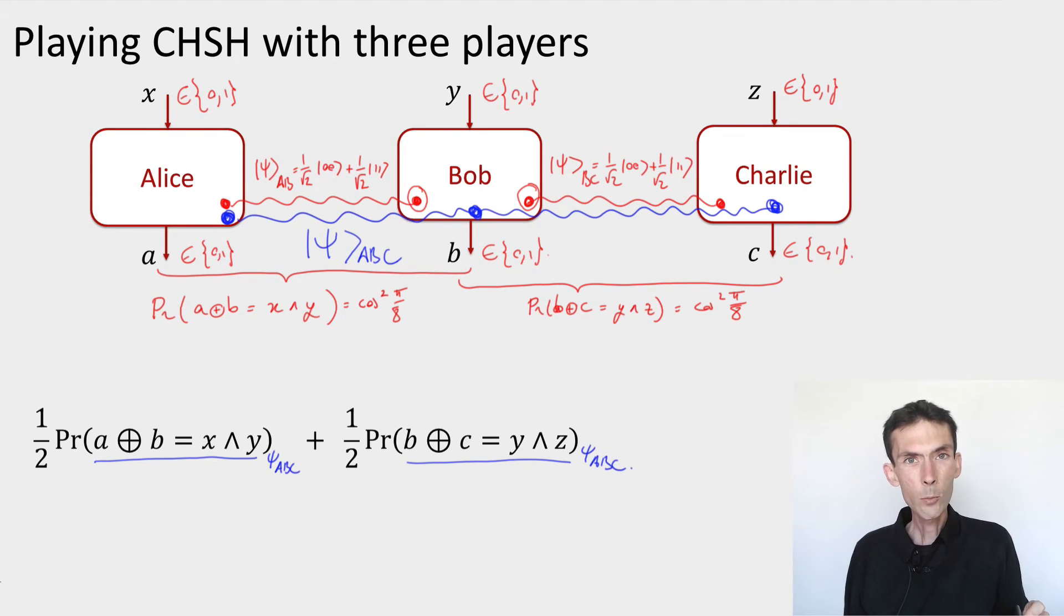So if they were able to play the CHSH games as you know they can if they just know with whom they're playing it, then this should be a half of cos squared pi over 8 plus a half cos squared pi over 8, I should get cos squared pi over 8, about 0.85.